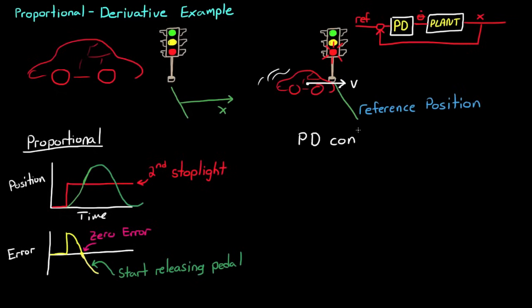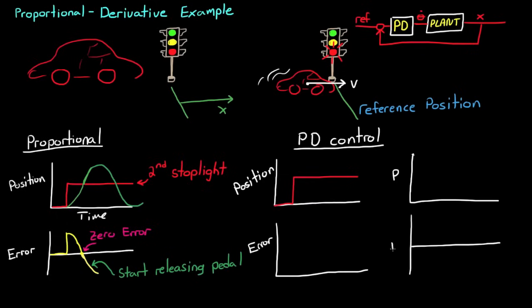When you add the derivative term to the controller, making a PD controller, you're adjusting the change in angle of the pedal based on the rate of change of the error, as well as the magnitude. In other words, you recognize that you're closing in awfully fast on the light, so you'd better start releasing the gas pedal a bit early.